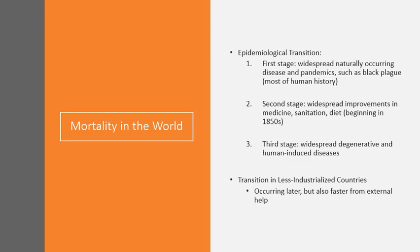By the second stage, we begin to see widespread improvements in terms of medicine, sanitation, and diet. For the developed world, that began in the 1850s. For other parts of the world, it has not really happened yet, particularly in Central and Eastern and Western Africa.